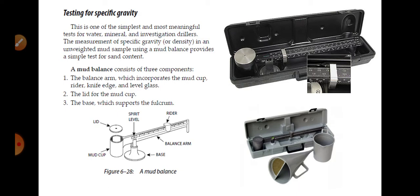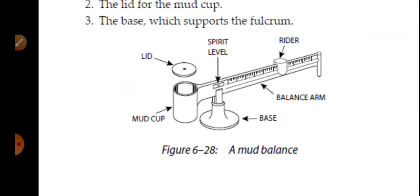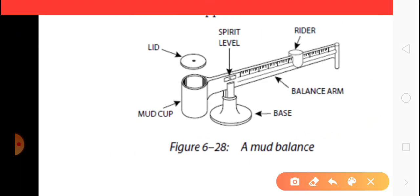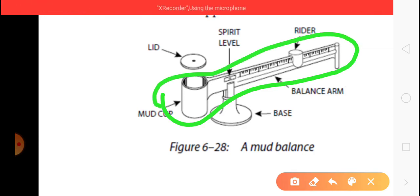How to calculate the mud weight? What are the main components of the mud balancer? First one is the mud balancer arm which incorporates the mud cup. You see here, this is the mud balancer arm.